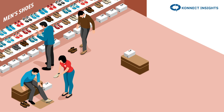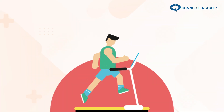A customer visits a Nike store to purchase running shoes. The sales associate takes the time to understand the customer's needs and recommends the perfect pair of shoes based on their preferences. The customer is also offered a free trial run on a treadmill to test the shoes before making the purchase. The checkout process is quick and easy, and the customer receives a personalized email thanking them for their purchase and inviting them to join Nike's loyalty program.